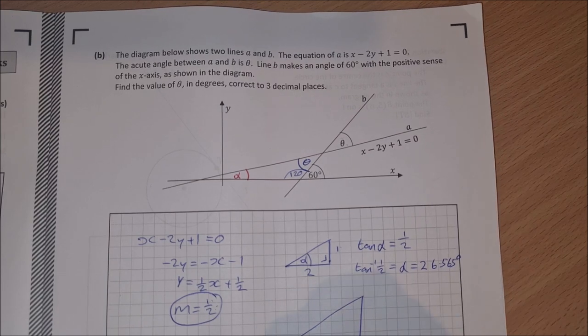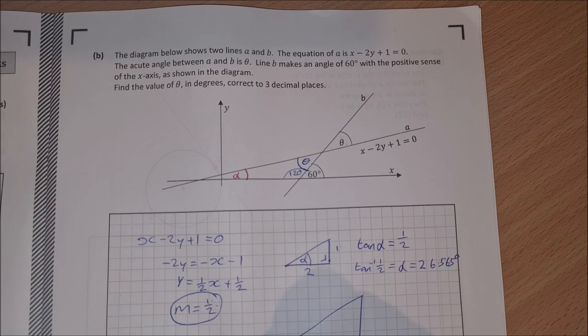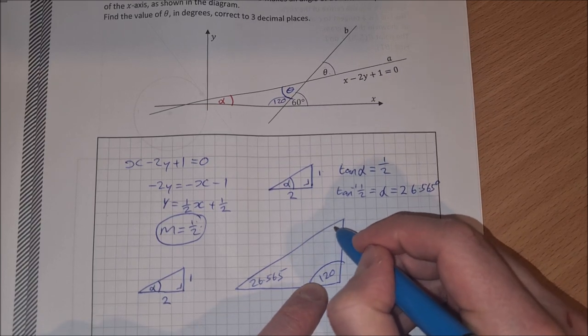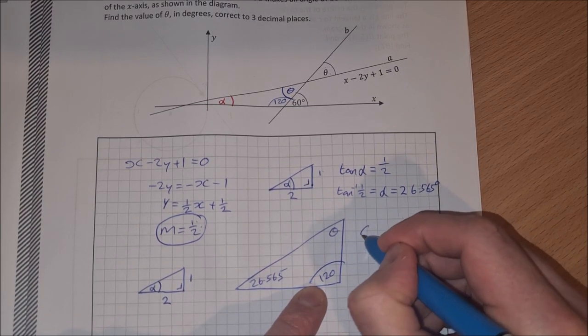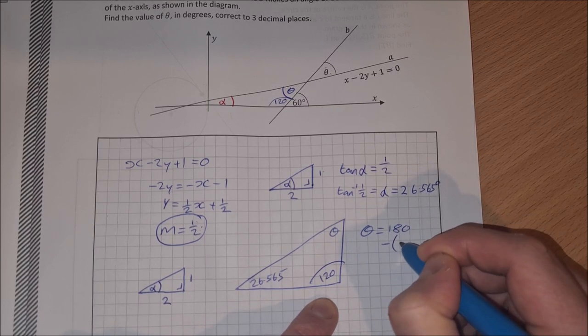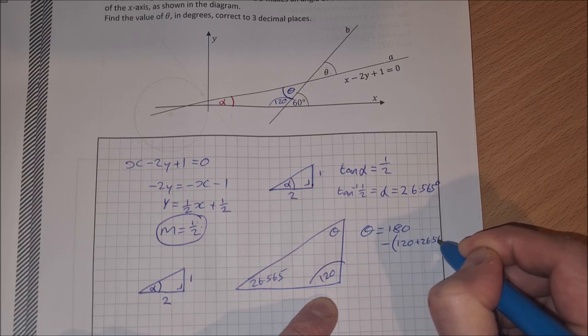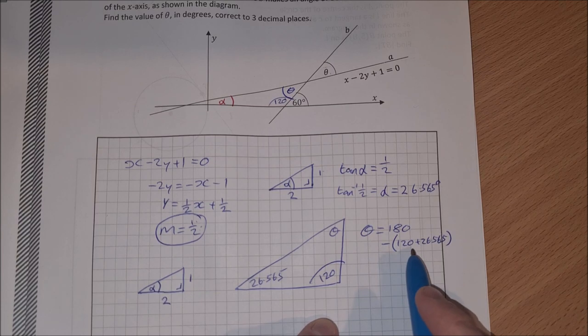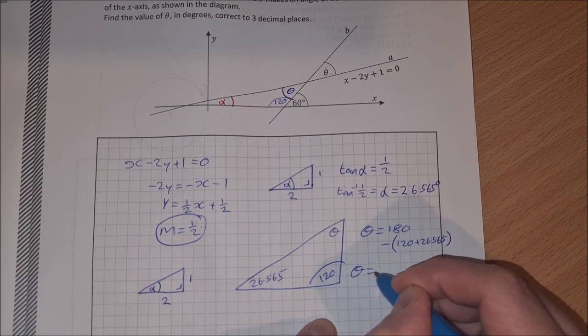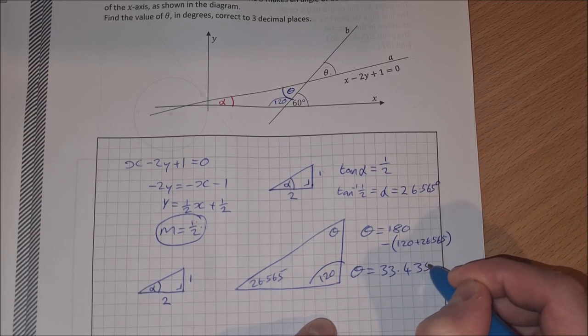So now I have the triangle where I have 120, I have 26.565, and then this is my angle theta. So theta is equal to 180 minus 120 plus 26.565. Theta is equal to 33.435 degrees.